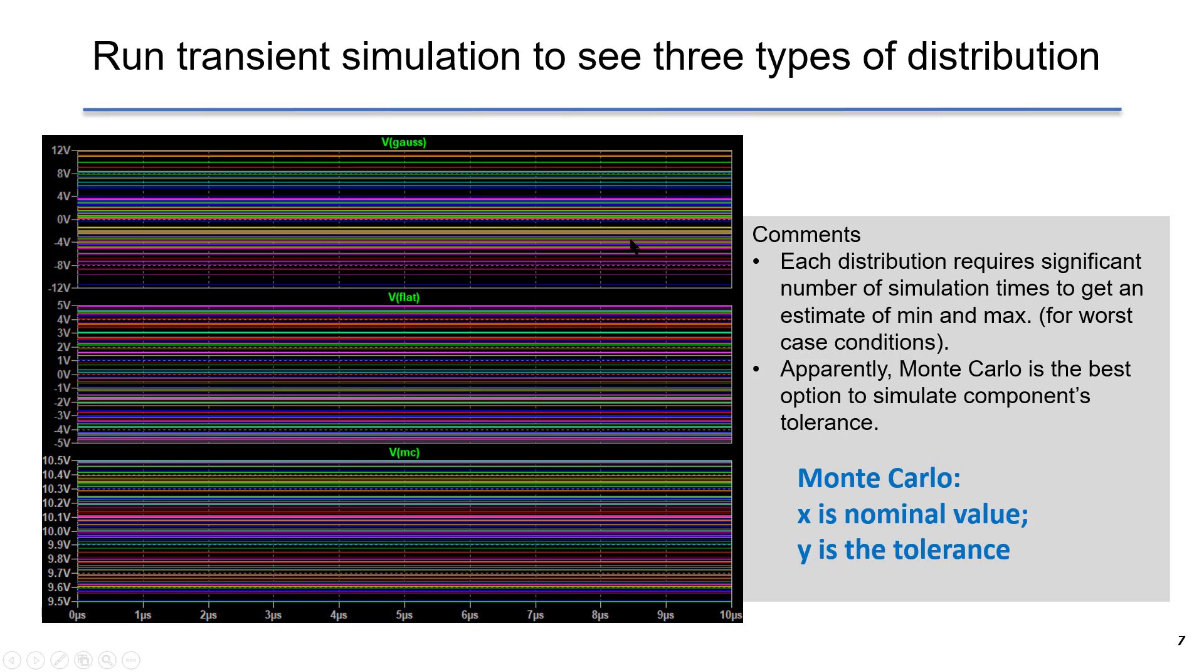Each distribution requires significant number of simulation times to get an estimate of minimum and maximum for worst case conditions, because we are interested in the minimum and maximum values. Apparently, the last one, Monte Carlo, is the best option to simulate component's tolerance, giving X as the nominal value and Y as the tolerance.